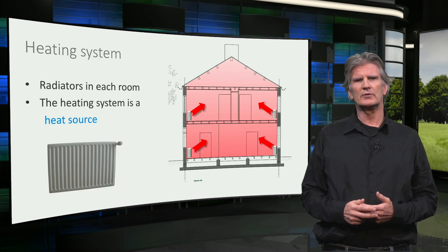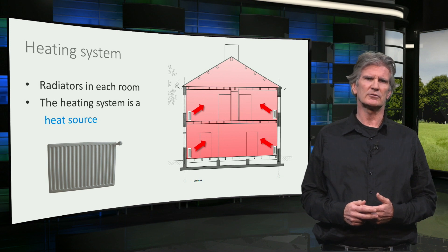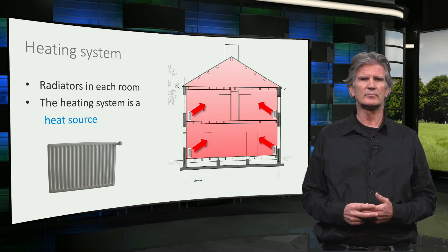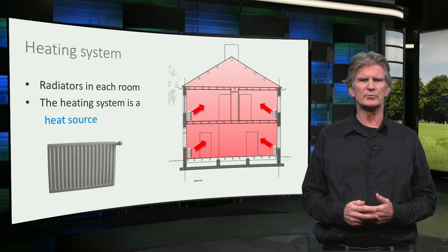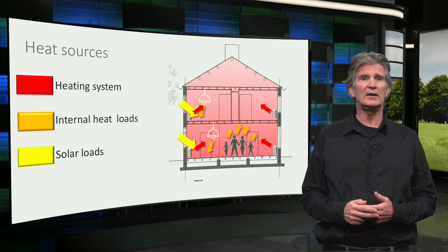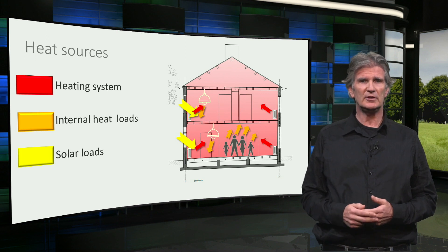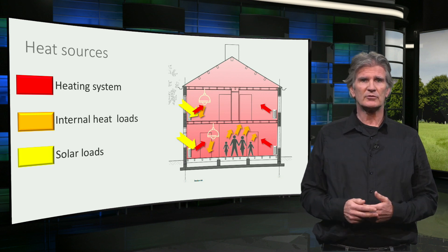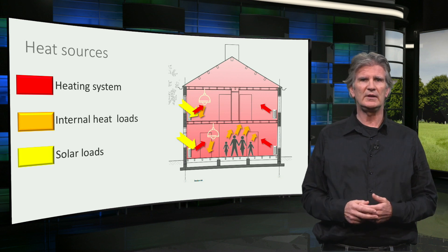In winter the solar loads and the internal heat loads are not enough to cover the heat loss, and the heating system does the rest. Usually the heat is provided by radiators in the rooms. So in this case there are three different heat sources: the incoming solar energy, the internal heat loads, and the heating system — all working together to heat the building to a comfortable temperature.